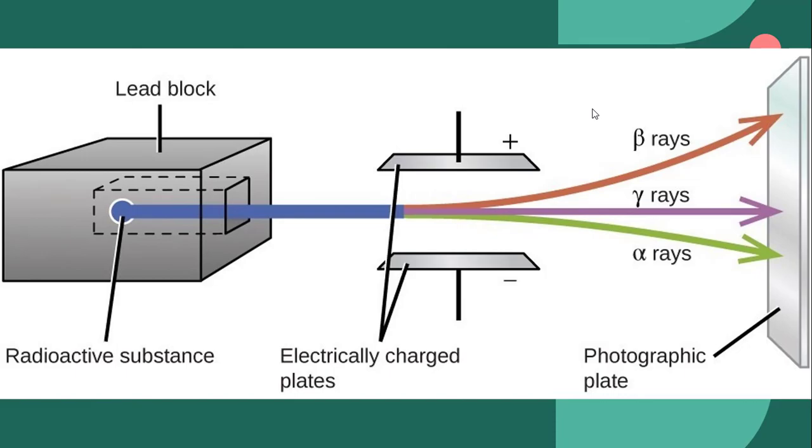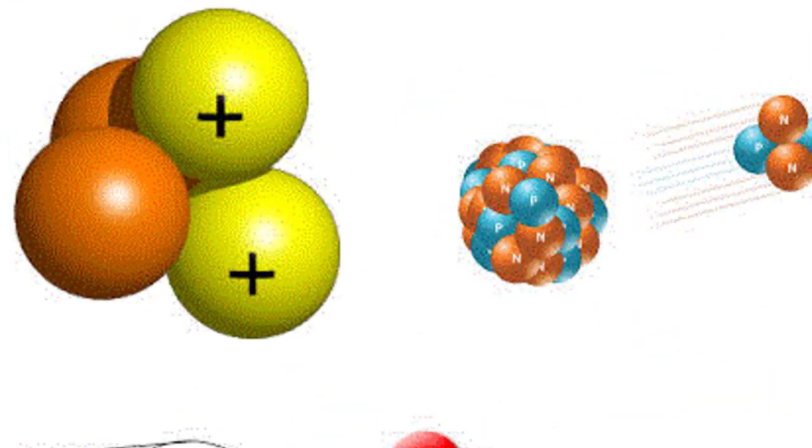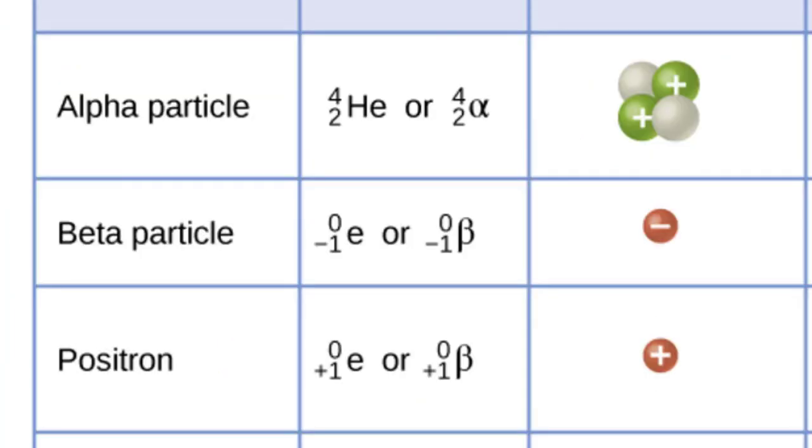Further, in 1909, Rutherford and Thomas Royds observed that alpha particles carry two units of charge and they also have mass approximately four times than that of hydrogen. So, in other words, alpha particles are actually helium nucleus. They consist of two neutrons and two protons.